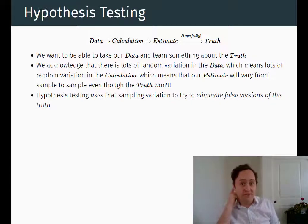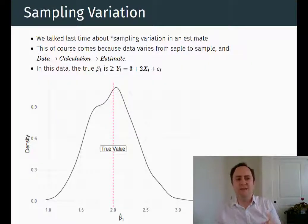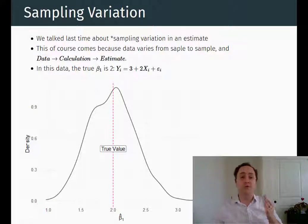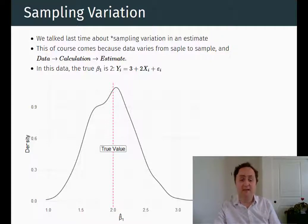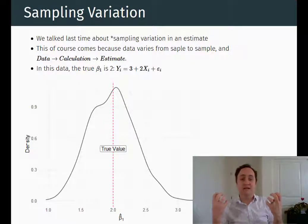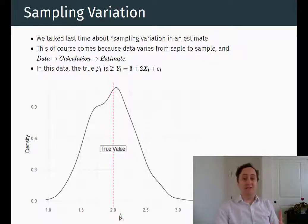We don't have infinite numbers of observations as you would need in order to get the true value. So we need to think about the sampling variation of our estimate. Every time you pull a sample of data and calculate your estimate, it's going to vary a little bit simply because you are pulling a random sample — you're not getting all the data. Sometimes you're going to get a sample that looks a little different, because your data is a random variable, and therefore your calculation is random. It's going to vary a little bit across samples.